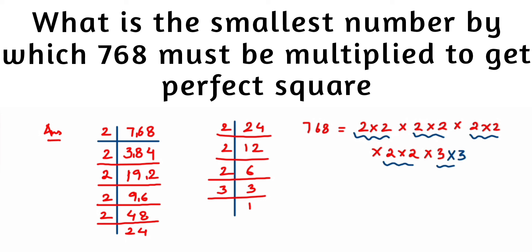So the smallest number to be multiplied is 3. Multiplying both sides: 3 × 768 = 2304. We can write 2304 = (2 × 2) × (2 × 2) × (2 × 2) × (2 × 2) × (3 × 3), showing all factors are now in pairs.